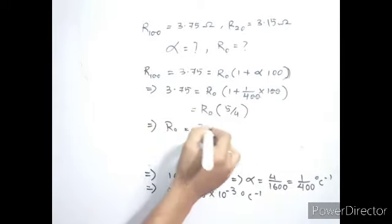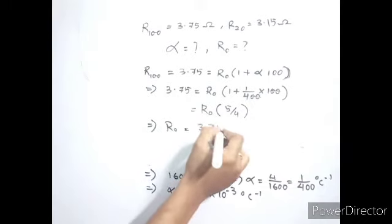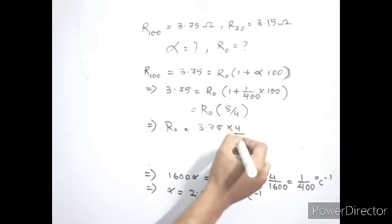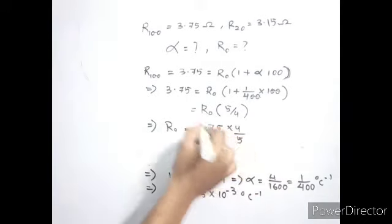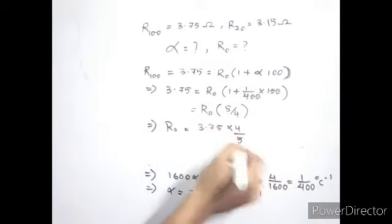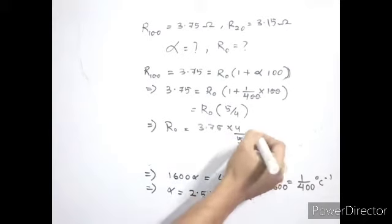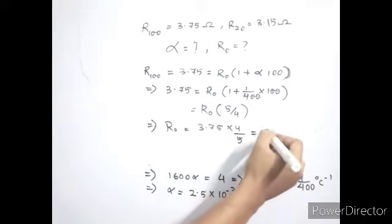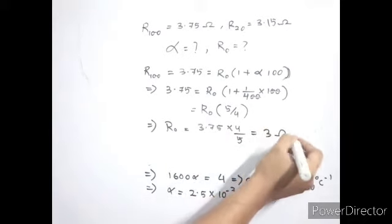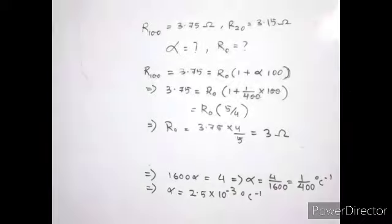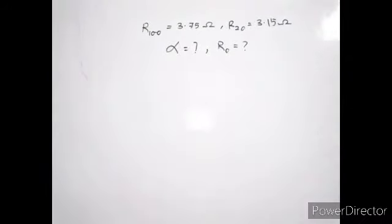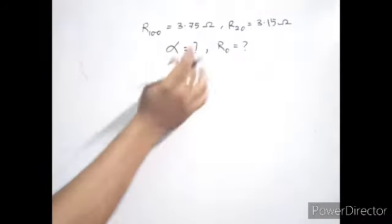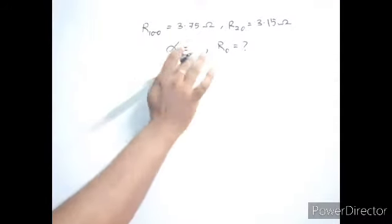Cross-multiplying gives R₀ equal to 3.75 times 4 divided by 5. Five cancels with 3.75, and 0.75 times 4 gives 3. So R₀ equals 3 ohms.